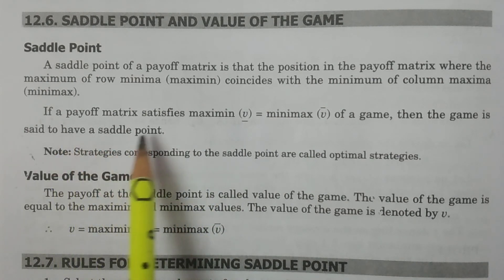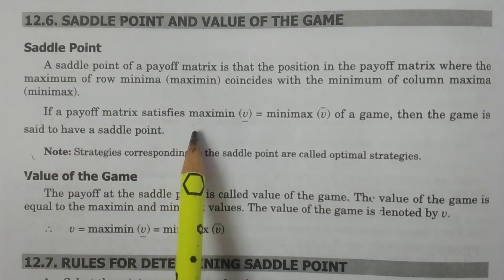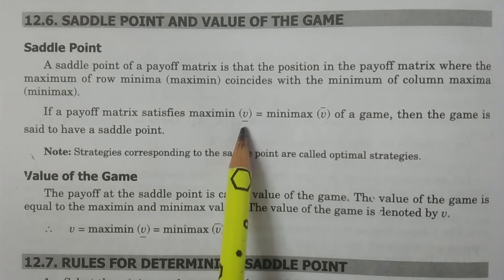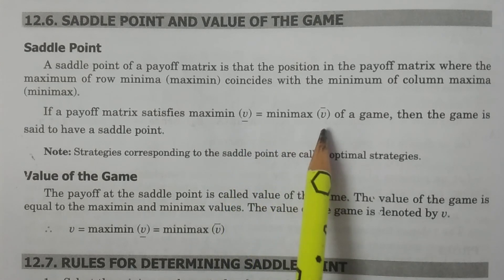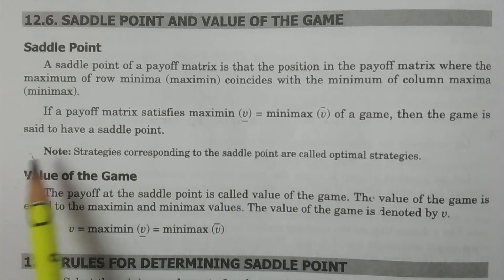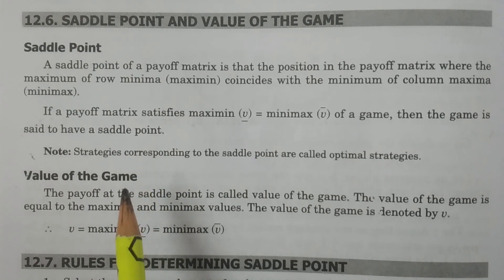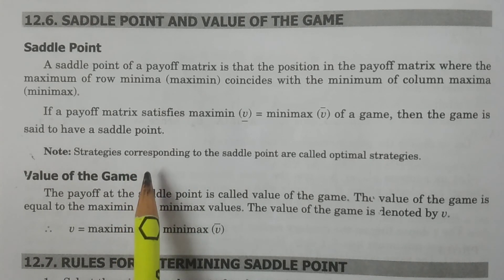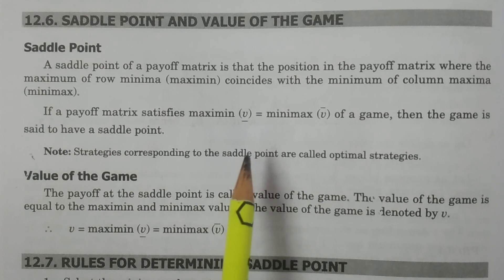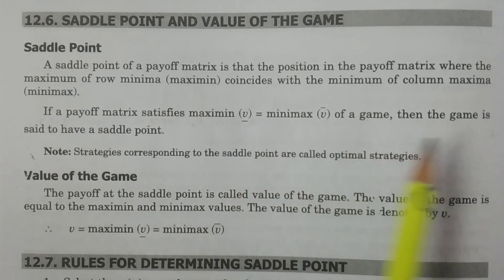If a payoff matrix satisfies maximin — that is, the lower value of the game — equals minimax — the upper value of the game — then the game is said to have a saddle point. So if maximin equals minimax in a particular payoff matrix, then there is a saddle point.